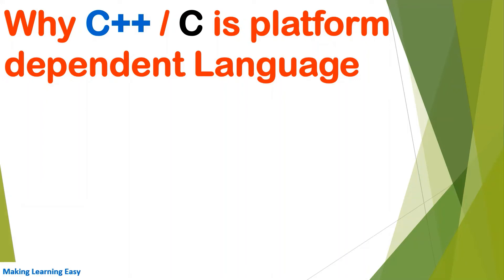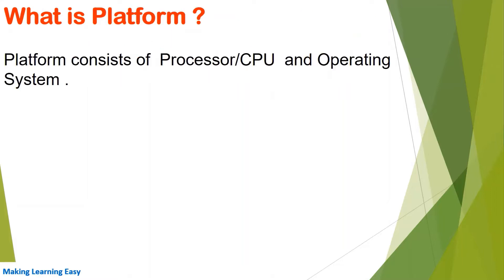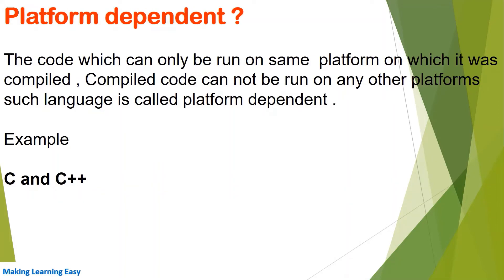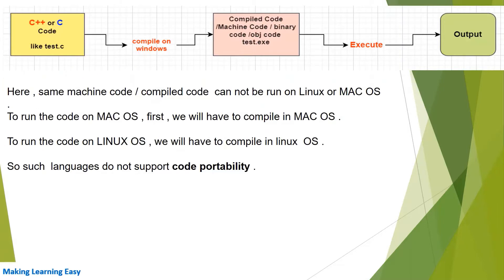Hello everyone, welcome to the session. In this session we will see why C++ or C is a platform dependent language. A platform consists of a processor or CPU and the operating system. A platform dependent programming language is one where the code can only be run on the same platform on which it was compiled, or the compiled code cannot be run on any other platform. Examples of these languages are C and C++.